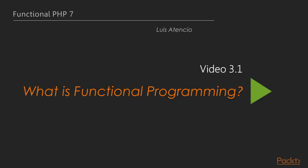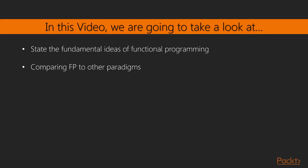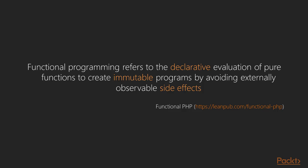First, let's begin by defining what functional programming really is. Functional programming refers to the declarative evaluation of pure functions to create immutable programs by avoiding externally observable side effects. Notice that I've taken the liberty to parse out some key terms here. We're going to look at code that is declarative, that is immutable, and that is free of side effects.